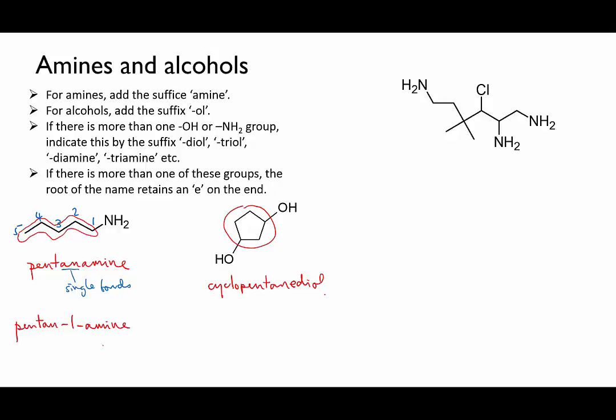For some reason tradition dictates that we keep the E on the end of the pentane because it's a diol. So with just one alcohol group it would be cyclopentanol, but with two it becomes cyclopentanediol. Except if you're writing in German, they leave the E off. Ich weiß nicht warum.